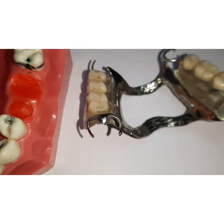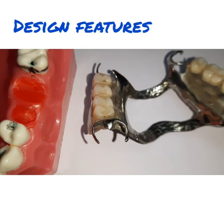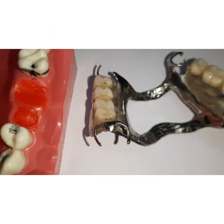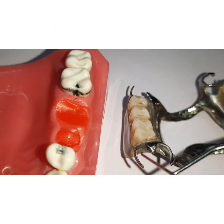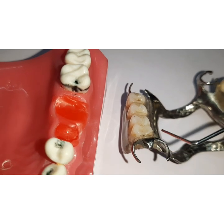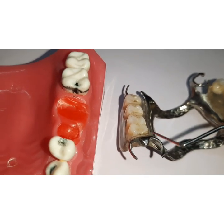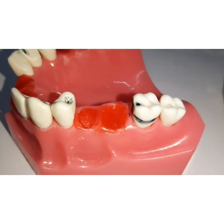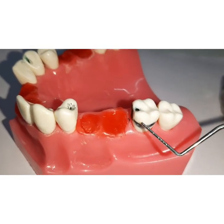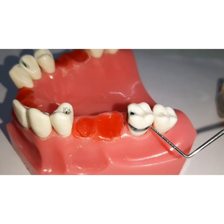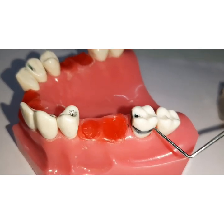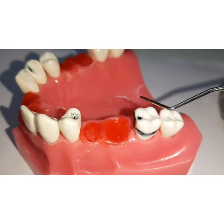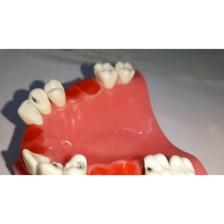Now we come to the design features. Since it is an occlusally approaching clasp, it should originate from above the height of contour. Only the retentive terminal will engage into the undercut; all other components of the cast circumferential clasp will remain above the height of contour.